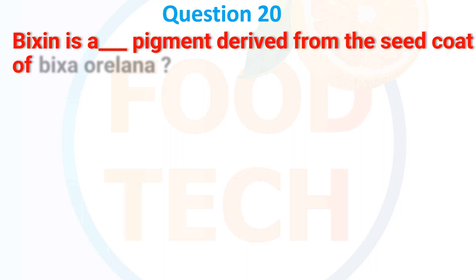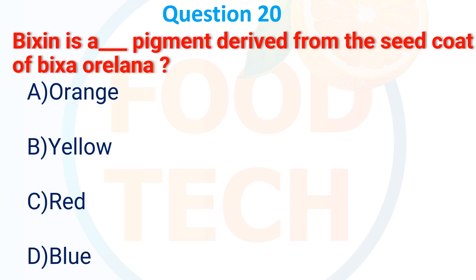Bixin is a pigment derived from the seed coat of Bixa orellana. The color of bixin is: A. Orange, B. Yellow, C. Red, D. Blue. The answer is C. Red.